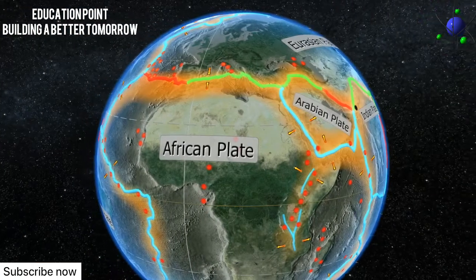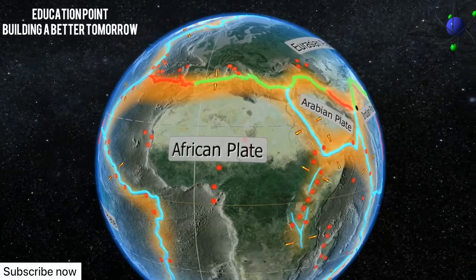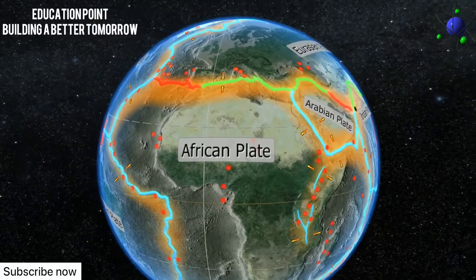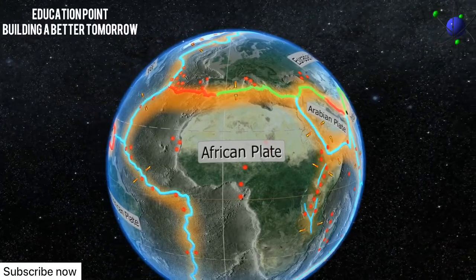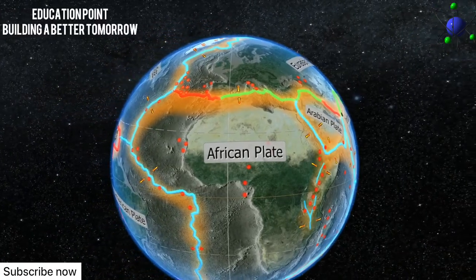Oceanic lithosphere is formed continuously at mid-ocean ridges and disappears at oceanic trenches. Thus, the size of plates and the location of dry land are continuously changing.